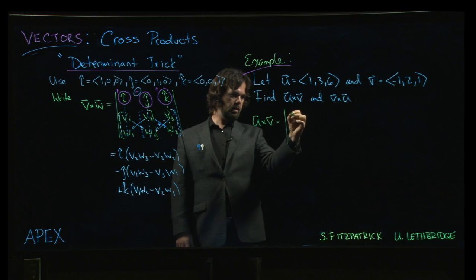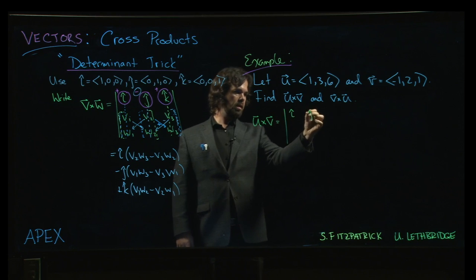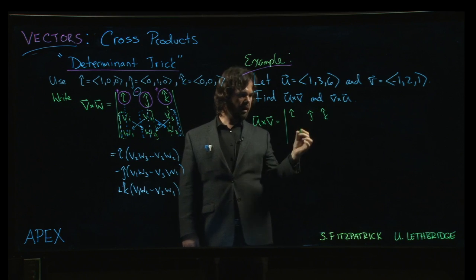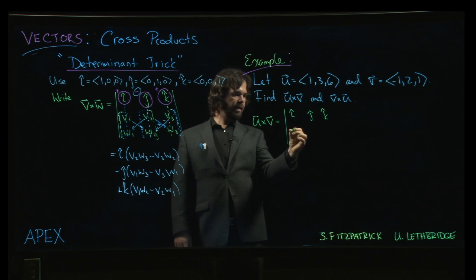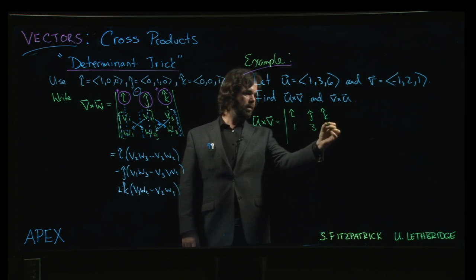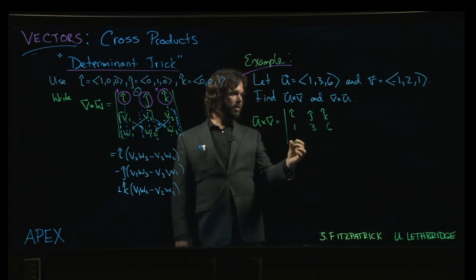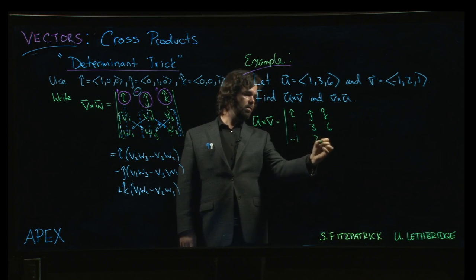So what we do is we put our i, j, k across the top. Now we put the entries of u, 1, 3, 6, and then we put the entries of v, minus 1, 2, 1.